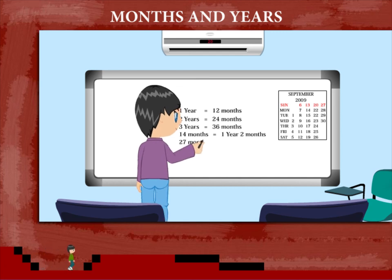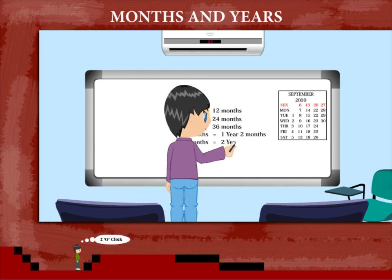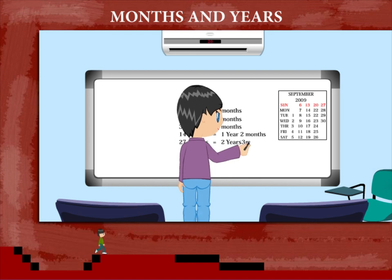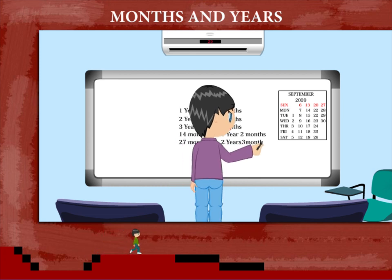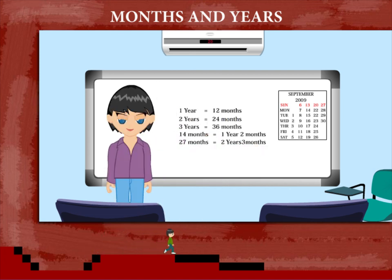How many years is 27 months? It is 2 years and 3 months.